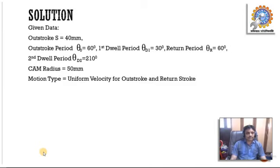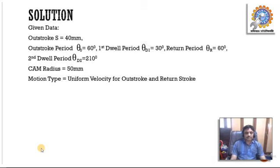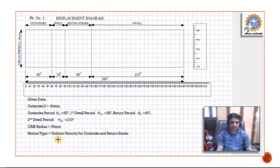The given data: out stroke S = 40 mm — in the displacement diagram you need to draw that 40 mm height. Out stroke period θ_o = 60°. First dwell period θ_d1 = 30°. Return stroke θ_r = 60°. The second dwell period θ_d2 = 360° − (60° + 30° + 60°) = 210°. Cam radius = 50 mm. Motion type for both out stroke and return stroke is uniform velocity.